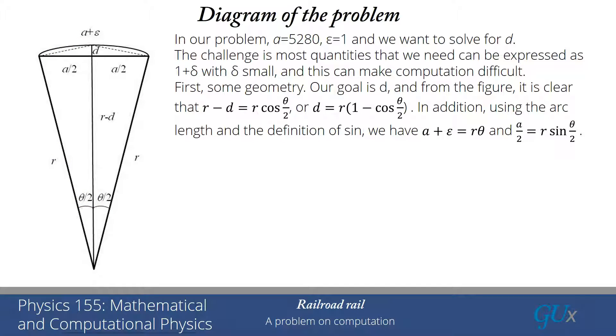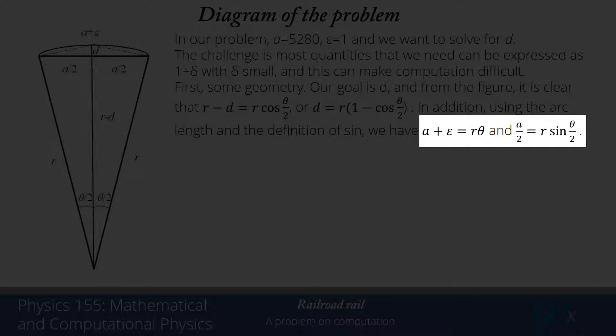I have now these two equations. A and epsilon are known. R and theta are unknown. So I have two equations and two unknowns. I should be able to solve for R and theta.